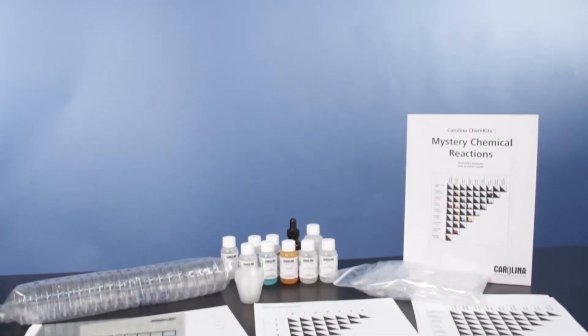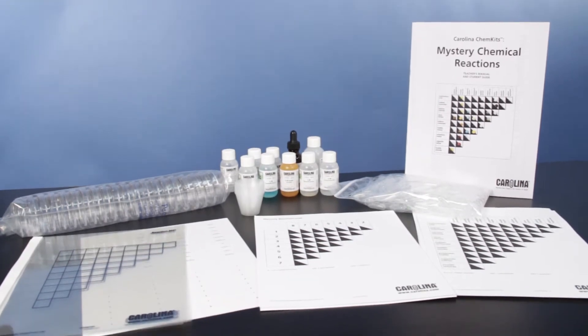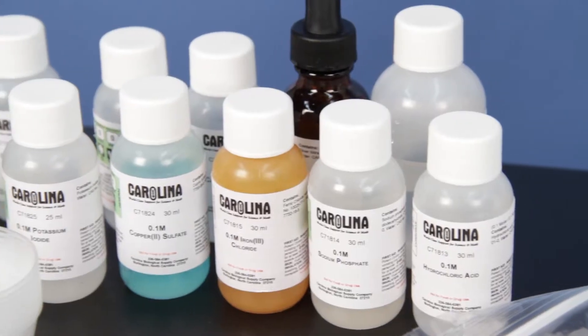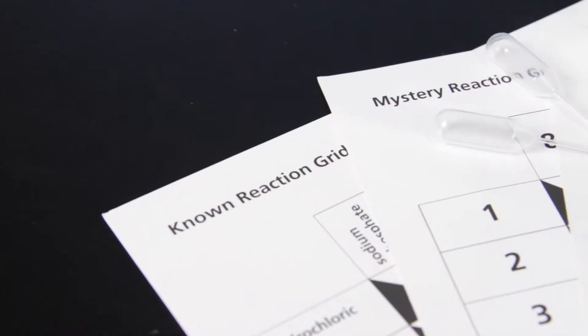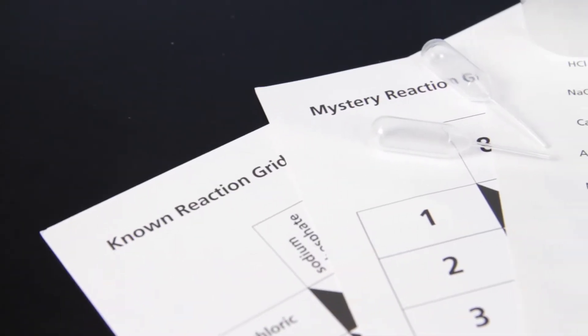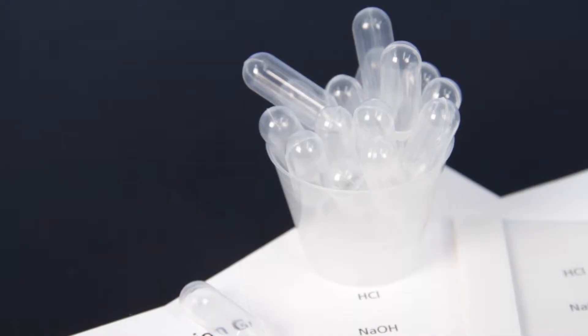Introduce students to a method of identifying unknown chemicals by their reaction types with the Mystery Chemical Reactions Chem Kit. Students investigate 45 different chemical reactions between 10 different chemicals in this guided inquiry microscale chemistry experiment.